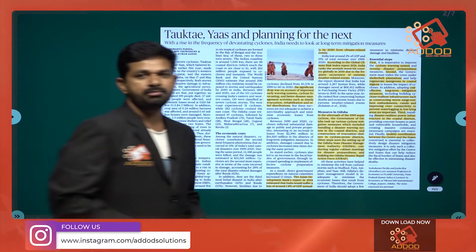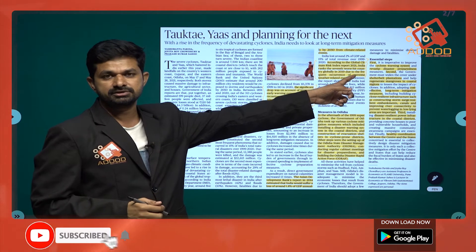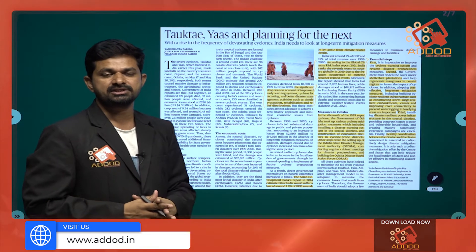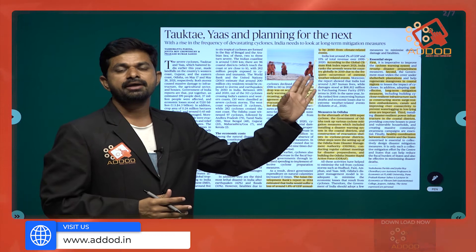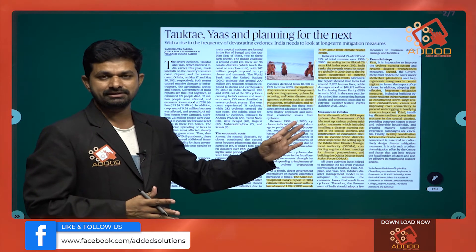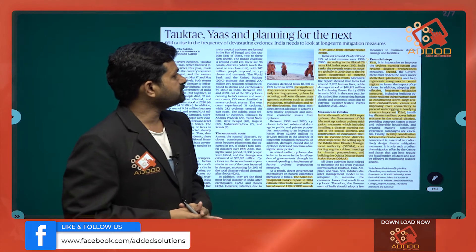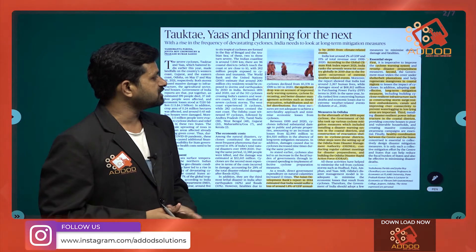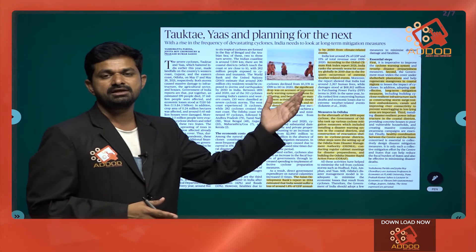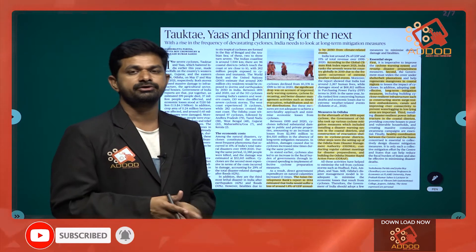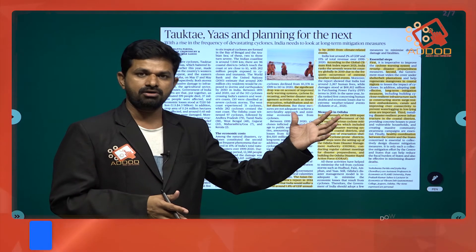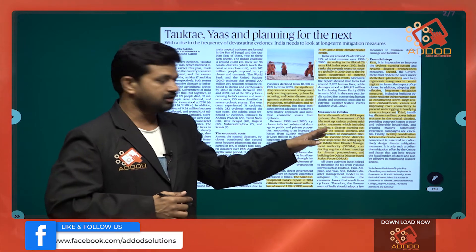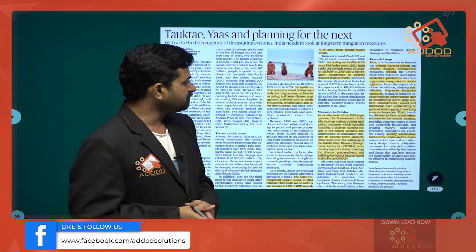Quoting such numbers and facts is what is called evidence-based writing, and this highlights the importance of newspaper reading and analysis. India ranks seventh worst-hit country globally in 2019 due to the frequent occurrence of extreme weather-related events — extreme cold, extreme heat, heat waves, cyclones, floods, or droughts. In the aftermath of the 1999 super cyclone, the government of Odisha took up various cyclone mitigation measures.